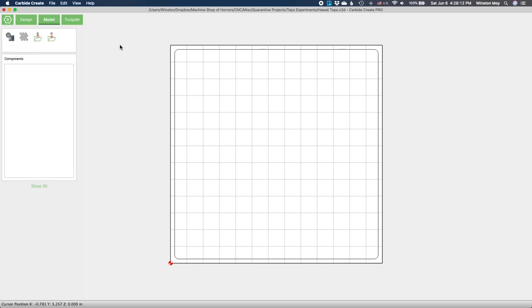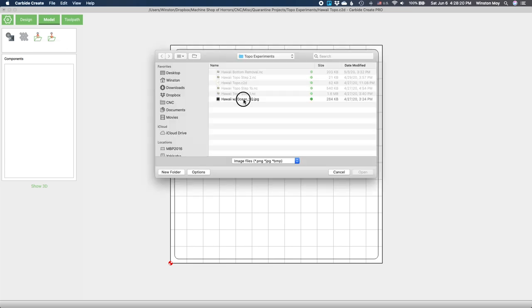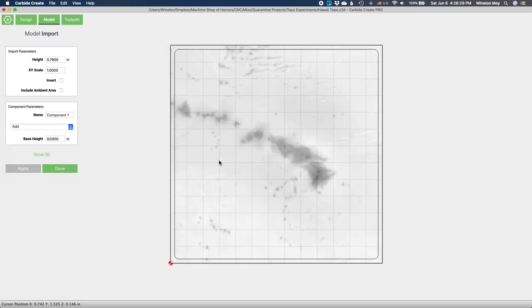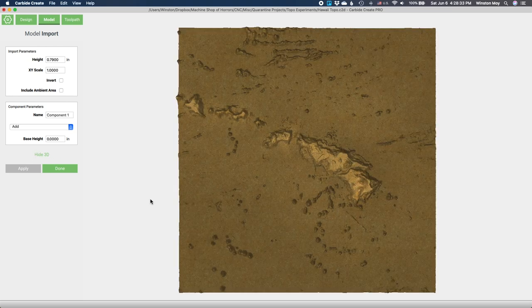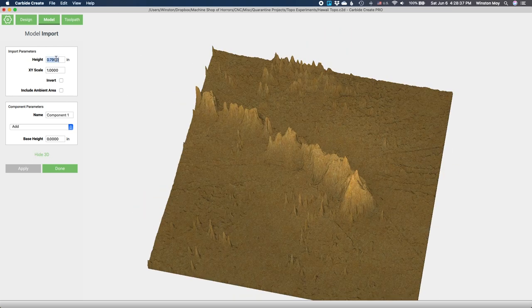I planned for this piece to be about 3.5 inches square, so I set my canvas accordingly. Using the image import tools in Carbide Create Pro, I scaled my height map so that the highest peak in the topographic model was about 0.3 inches taller than the lowest valley.